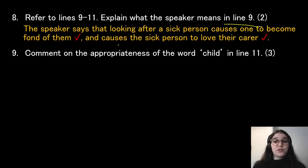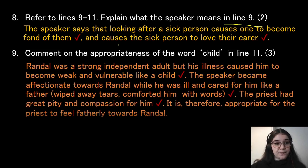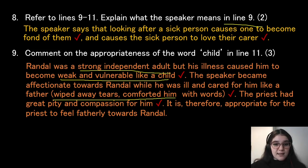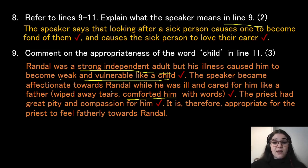Comment on the appropriateness of the word 'child' in line 11, for three marks. Randall was a strong independent adult, but his illness caused him to become weak and vulnerable like a child, showing how his health declined. The speaker became affectionate towards Randall while ill and cared for him like a father — wiping away Felix's tears and comforting him with his words, something a father would do. The priest had great pity and compassion for him, so it is appropriate for the priest to feel fatherly towards Randall.